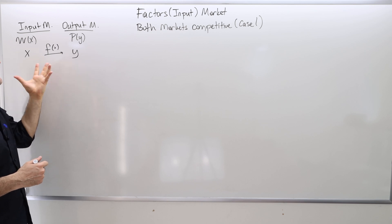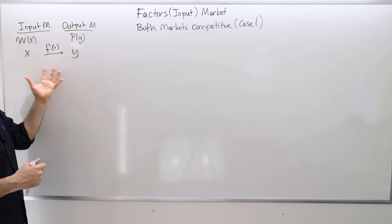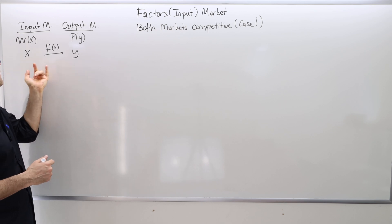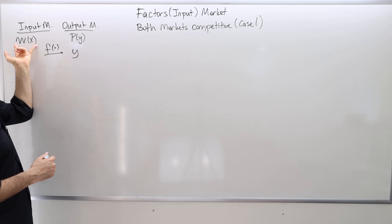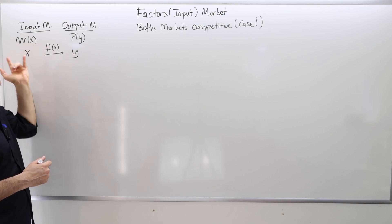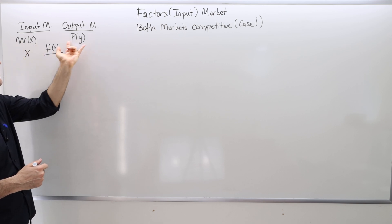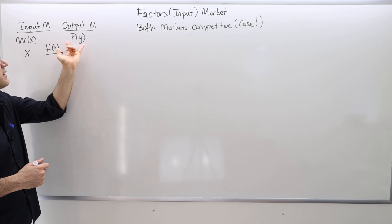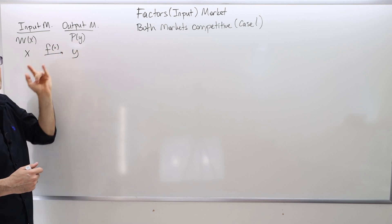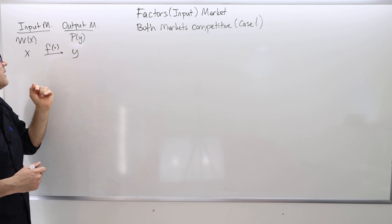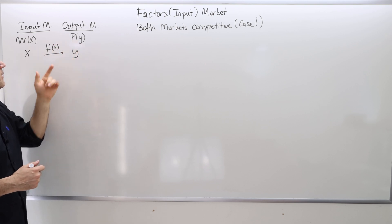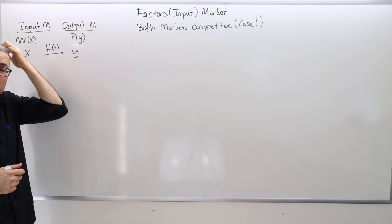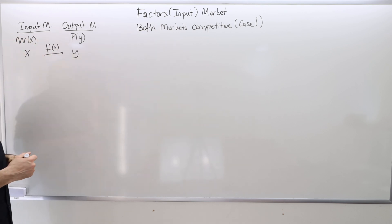Let's remember the assumptions. We have the input X — labor, for example — with a supply curve for labor as some increasing function. The price for good Y follows a downward sloping demand curve. Y denotes the output, and Y equals F(X) is the production function.